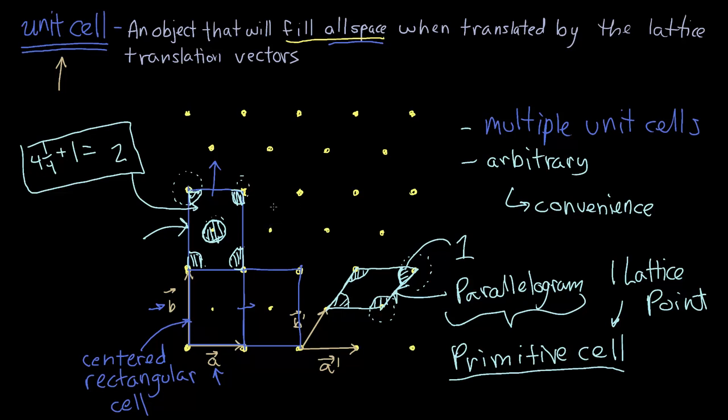A unit cell that I couldn't use would be a circle. And I'll try and demonstrate that here. So I'll draw some very rough circles around each one of these points. And you can see that if I tried to fill space with these circles, I would be left with some gaps in between.